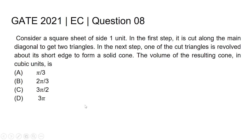Hi all, this is GATE 2021 Electronics and Communication Engineering question number 8. Consider a square sheet of side 1 unit. In the first step, it is cut along the main diagonal to get two triangles. In the next step...